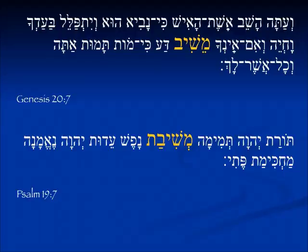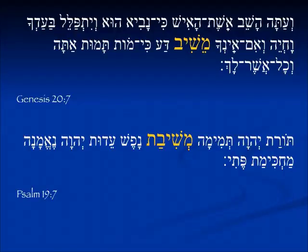By way of comparison, if we look at this in the Hifil form, we see that the vav becomes a yud — we've already covered this. In Genesis 20:7, Abraham is mixed up with having given his wife Sarah to the king of Gerar, Avimelech, and he needs to return her. God lets Avimelech know he needs to return Sarah to Abraham: ve'im eincha meshiv — 'if you do not return her,' if you do not cause her to be returned to Abraham. So the meanings between the Piel and the Hifil are pretty close; the Piel is not as common.